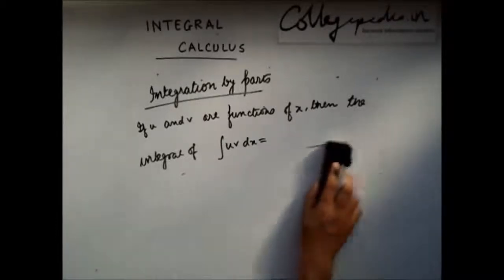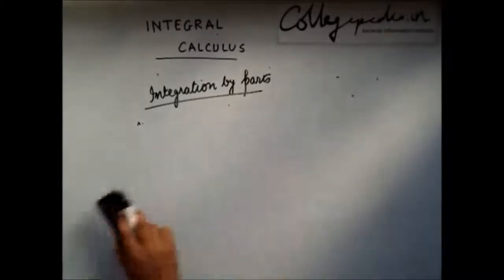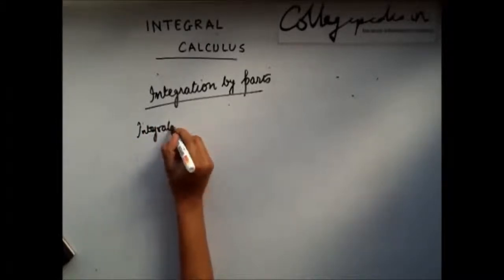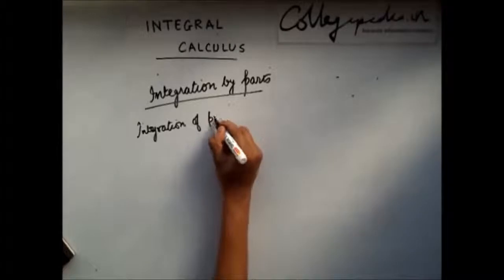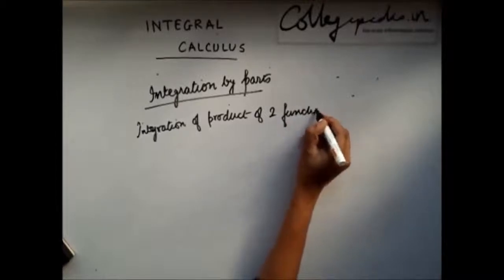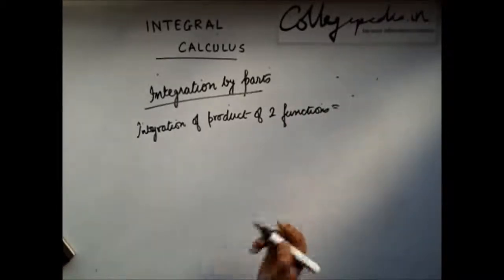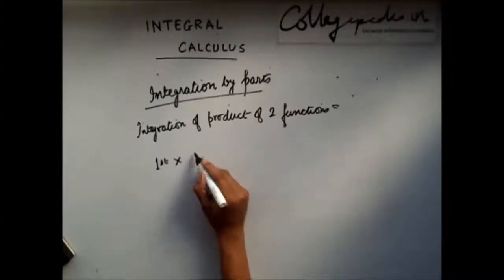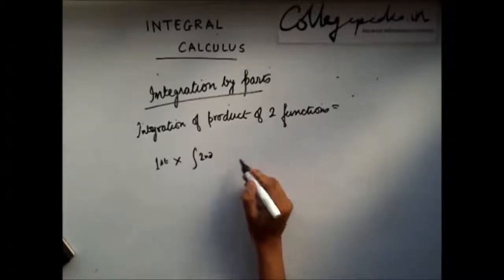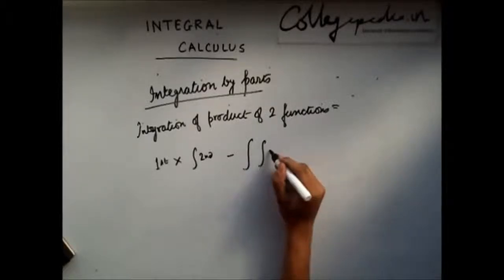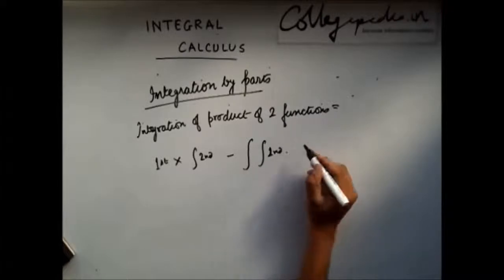If you want to state this formula you can state it as integration of product of two functions can be written as the first function multiplied by integration of second function minus integration of second function into derivative of first function.